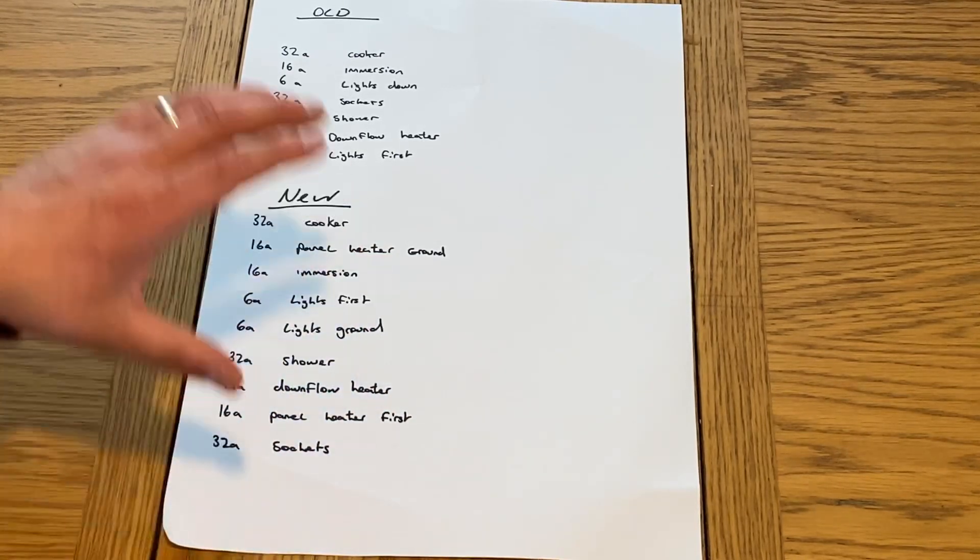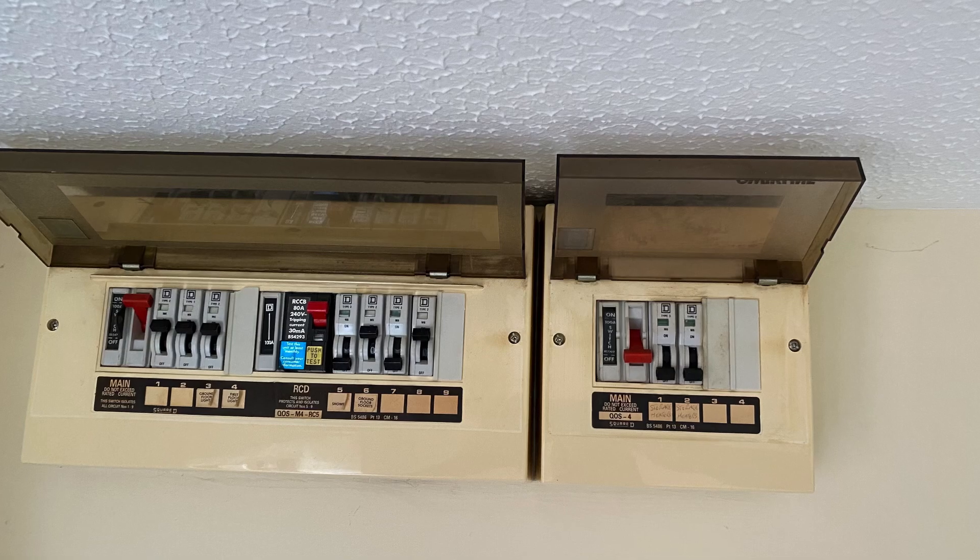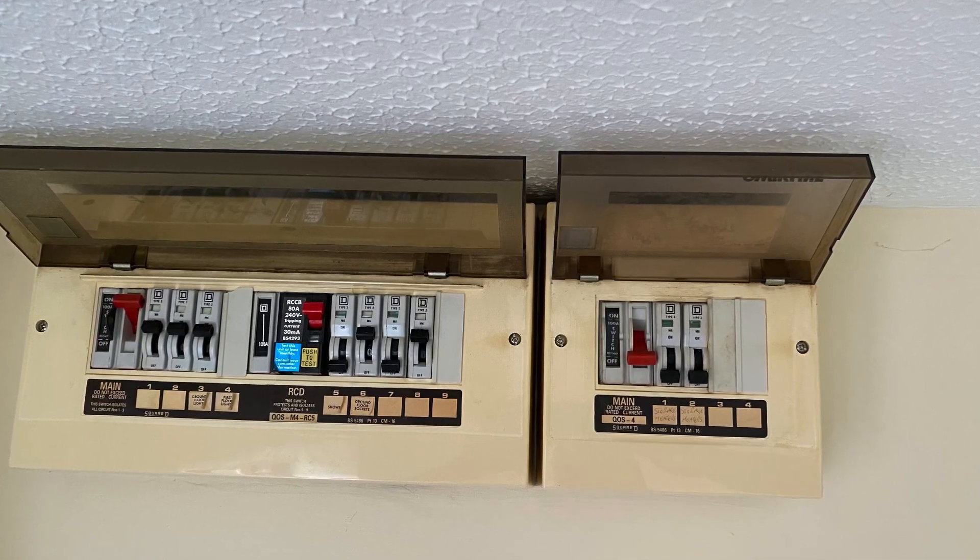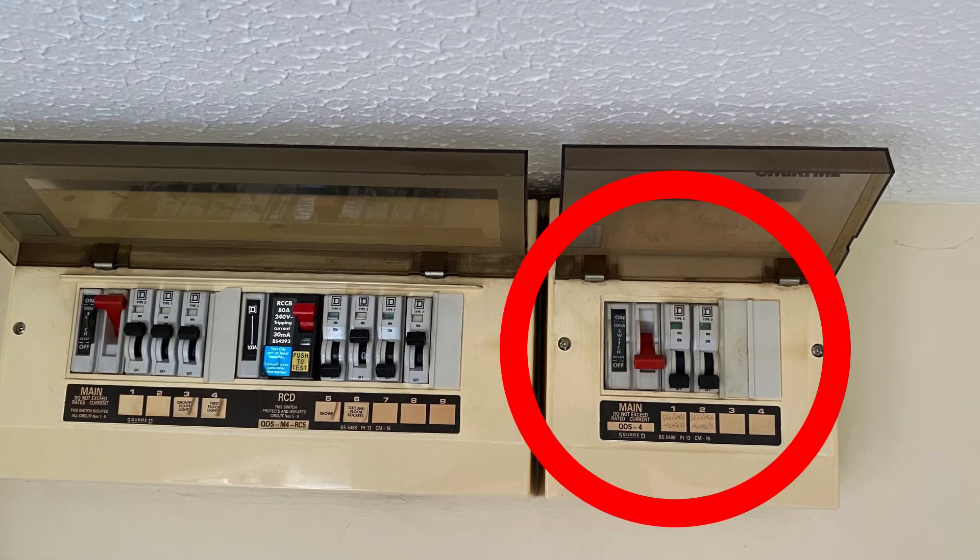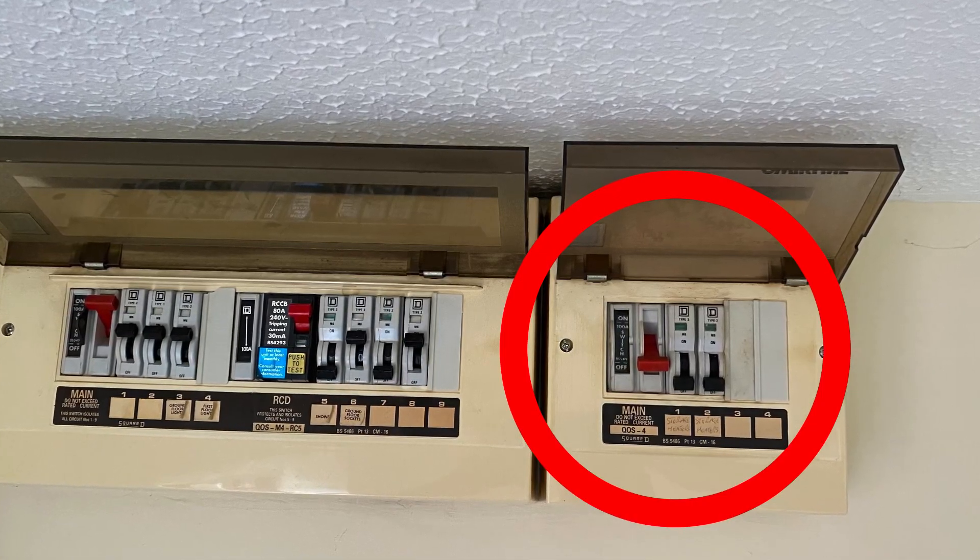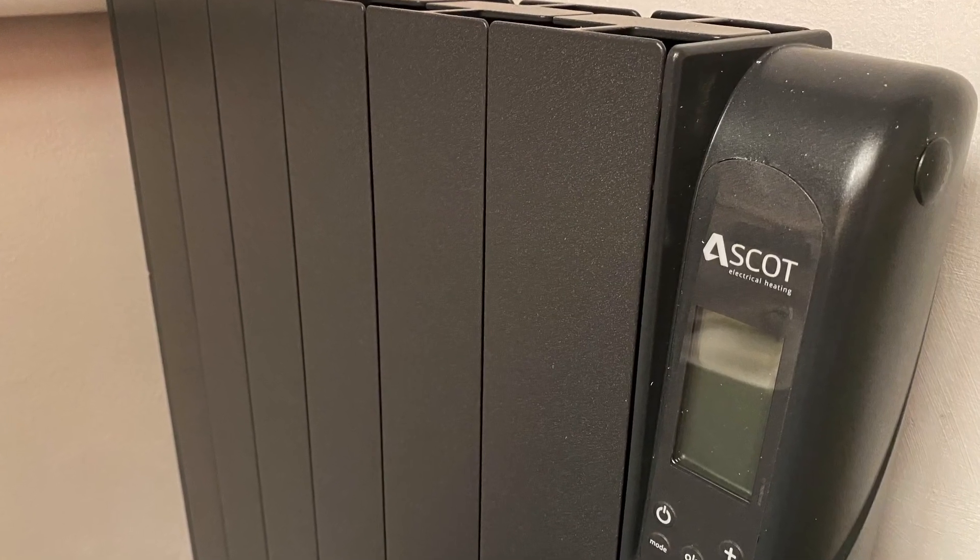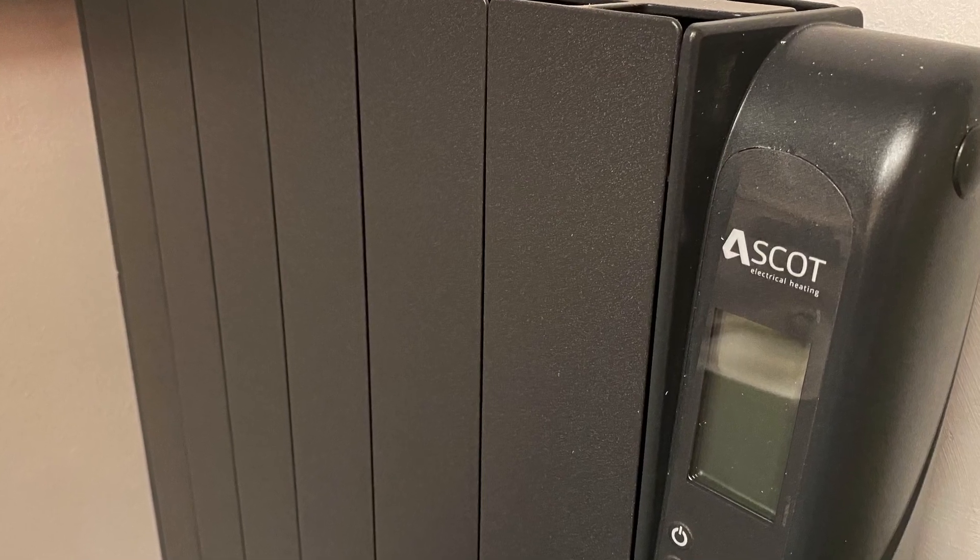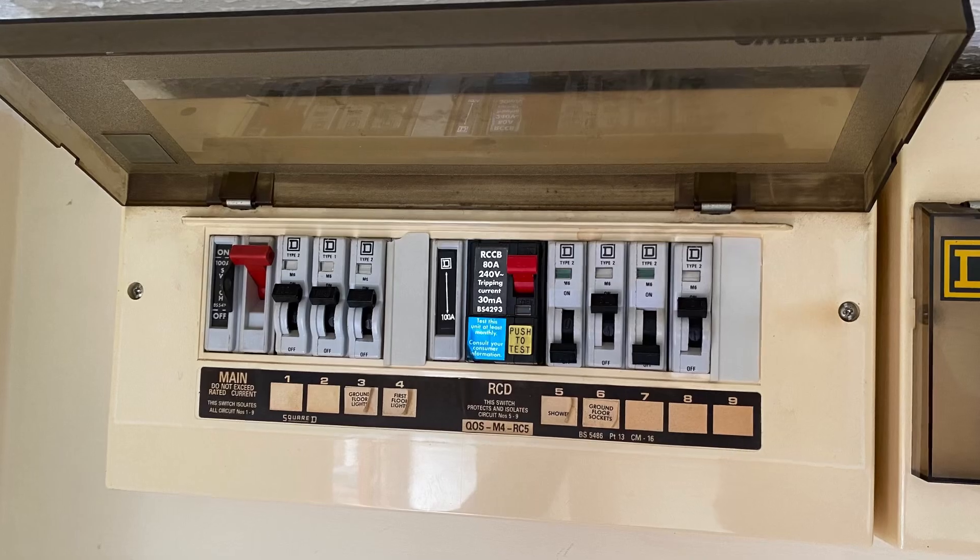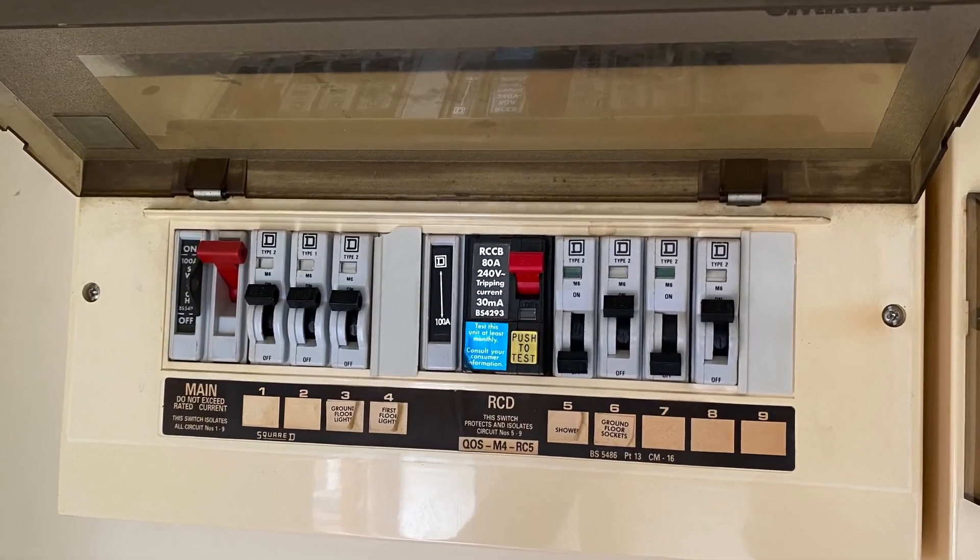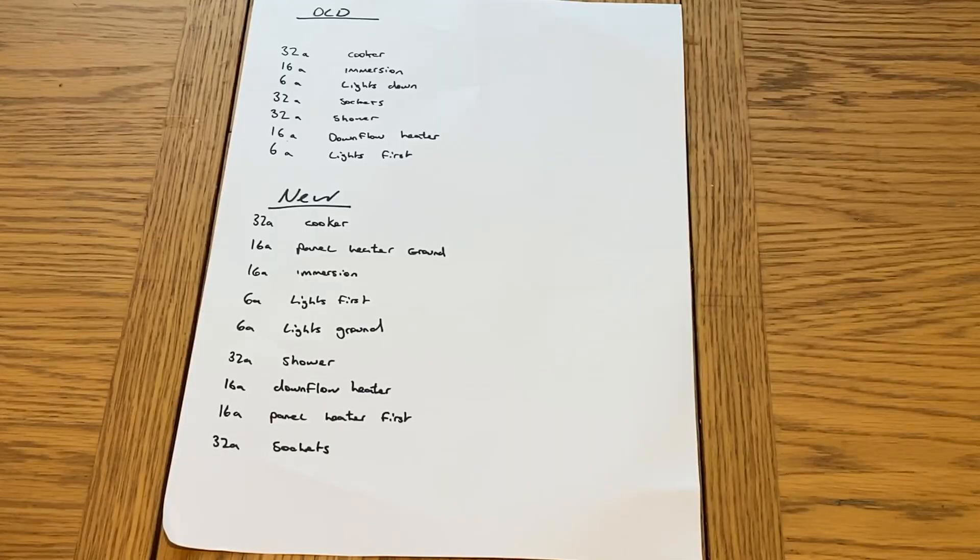It's a house renovation, only a little one bedroom house. They currently have Economy 7, but the renovators want to get rid of the storage heaters and put in electrical panel heaters in their place. So what we're going to do is remove the Economy 7 board and replace the old board, and we're going to incorporate them circuits into the new board.